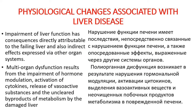Pathological changes associated with liver disease. Impaired liver function has consequences directly attributable to the failure of the liver and also indirect effects expressed with organ disease systems. Multi-organ dysfunction results from impaired hormone modulation, activation of cytokines and vasoactive substances, and then clearance of byproducts of metabolism by the damaged liver.